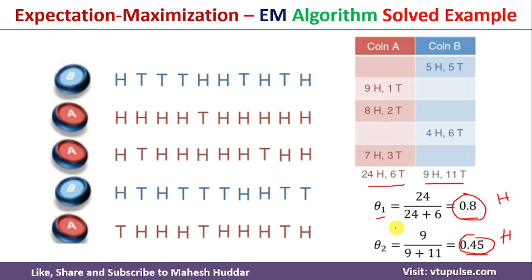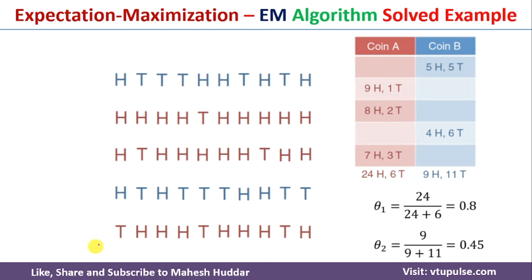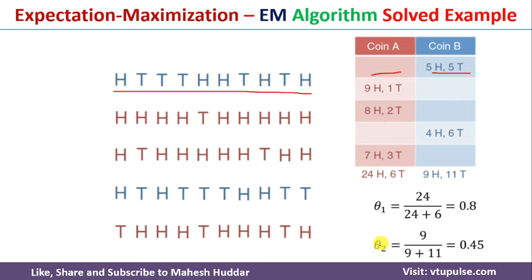But suppose we perform the same five experiments again, but we don't know the labels — that is, we don't know which coin was used. Without the labels, it is very difficult to fill the table, and if we cannot fill the table, we cannot calculate theta 1 and theta 2. For any given experiment, we wouldn't know whether to write the heads and tails under coin A or coin B. This is the problem we face when the labels are unknown, and to solve it, we apply the EM algorithm.